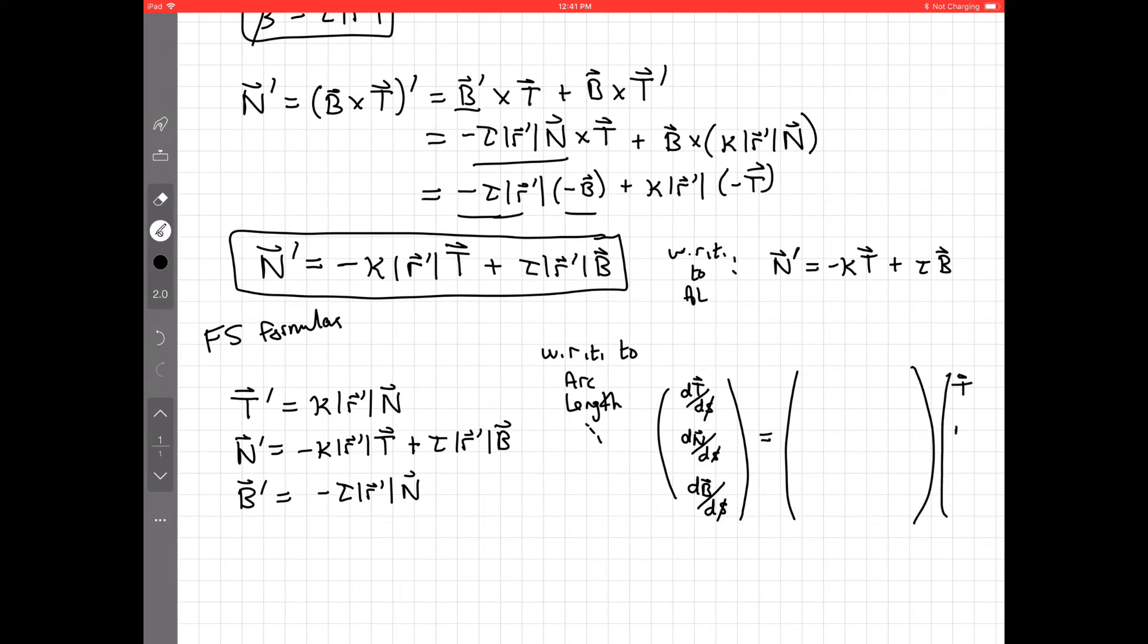We have t of s, n of s, b of s. There. And what's the transformation between the TNB frame and its derivative?